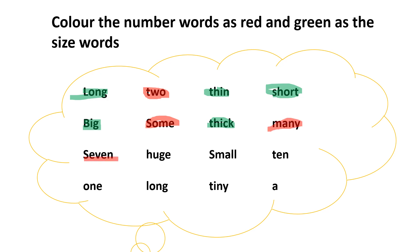'Seven' is a number name, so it is also a number word. 'Huge' is a size word, so we color it green. 'Small' is also a size word. 'Ten' is a number name, so we color it red. 'One' is also a number name, colored red. 'Long' is a size word, colored green. 'Tiny' is also a size word, colored green. 'A' is a number word.